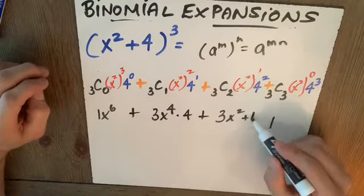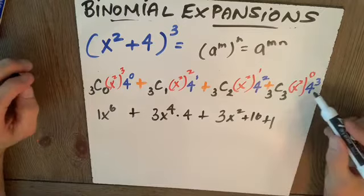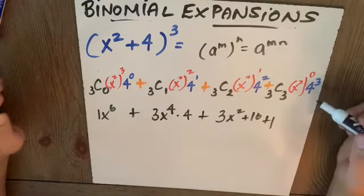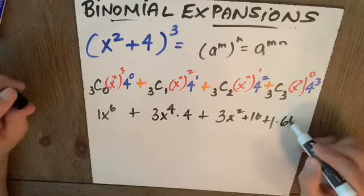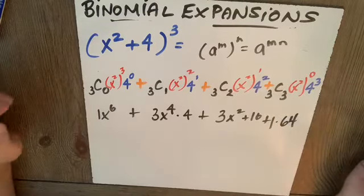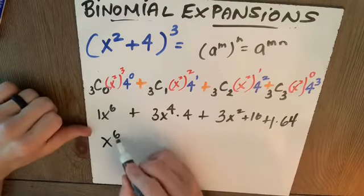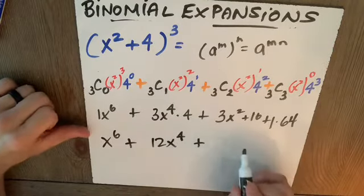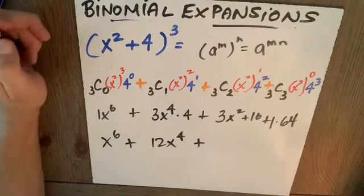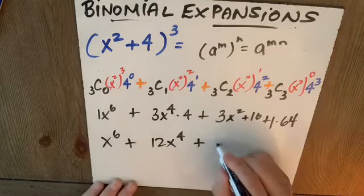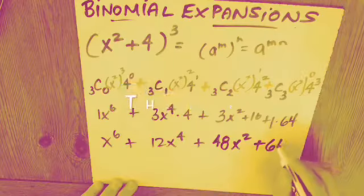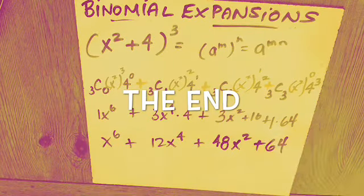So my final answer here is x to the sixth plus 12x to the fourth plus 48x squared plus 64. And there's no variable there.